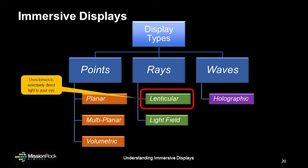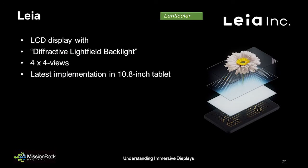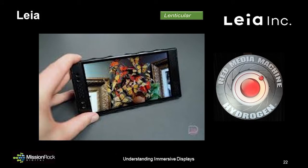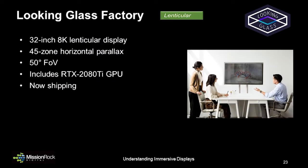Next, we'll consider displays that use rays of light projected from a display surface. The idea here is that the same point on the display surface may appear very different when the viewer shifts position. A lenticular display uses lenses to selectively direct light to the eyes. A popular example is the Leia display, which uses a unique diffractive backlight to create a matrix of 16 views — 4 in the horizontal axis and 4 in the vertical. This is the display technology used in the Red Hydrogen One phone. An exciting example of using light rays is the Looking Glass Factory 8K display, which uses an 8K panel to provide 45 different views of horizontal parallax over a 50-degree field of view, combined with the necessary rendering software. You can learn more about how this Looking Glass display is being used in another one of the IDEA content segments at the CIMTE 2020 Virtual Conference.